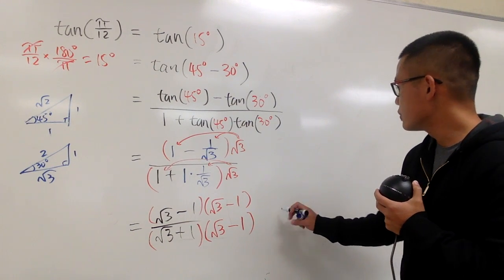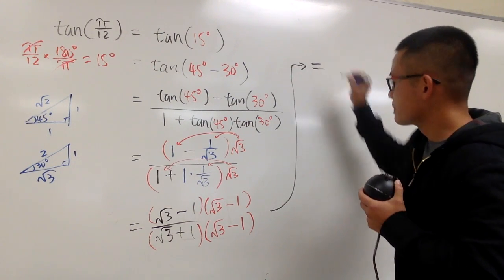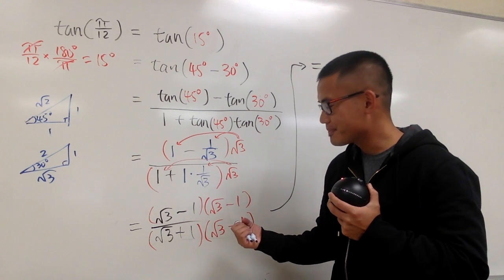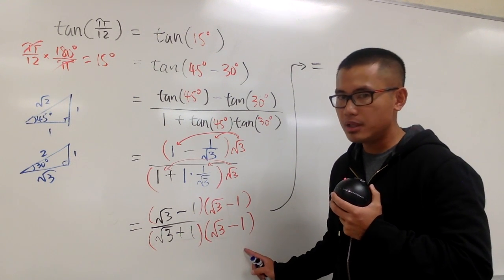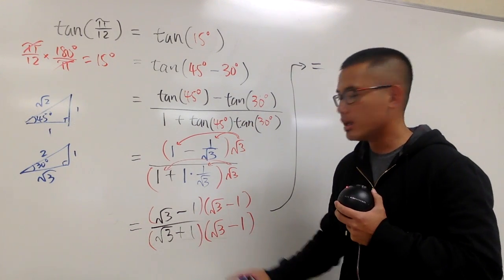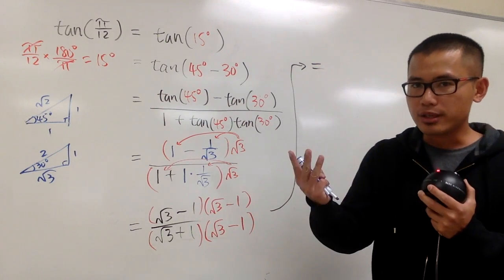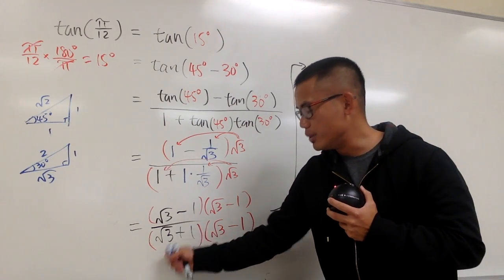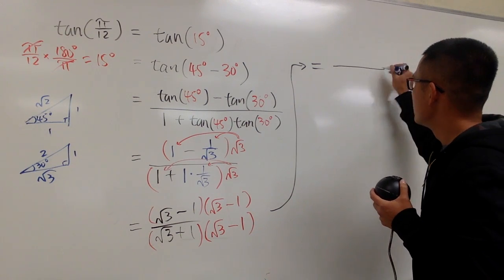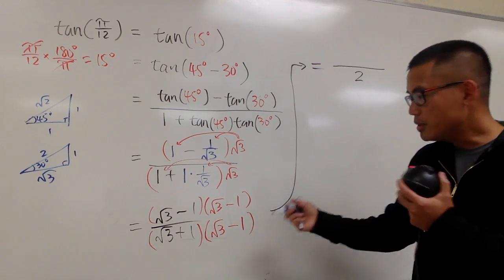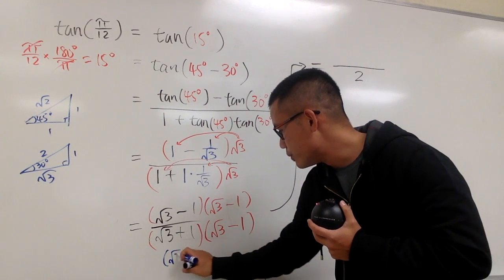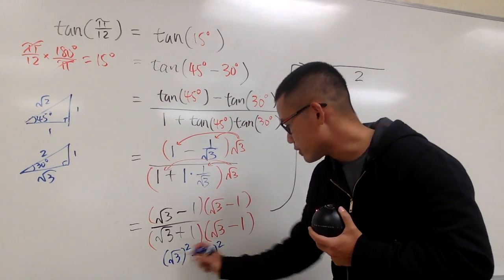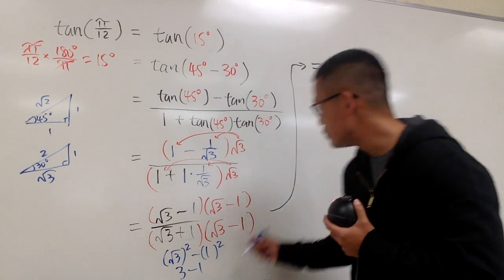Let's work out the bottom. Using the identity (a + b)(a − b) = a² − b², with a equal to square root of 3 and b equal to 1: square root of 3 squared is 3, and 1 squared is 1, so 3 minus 1 equals 2. The denominator is 2. You can also FOIL it out, but the formula gives 3 minus 1, which is 2.